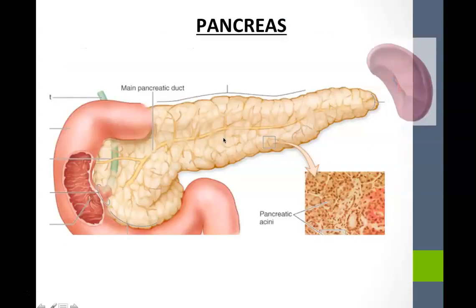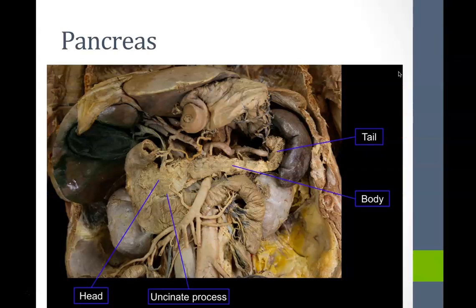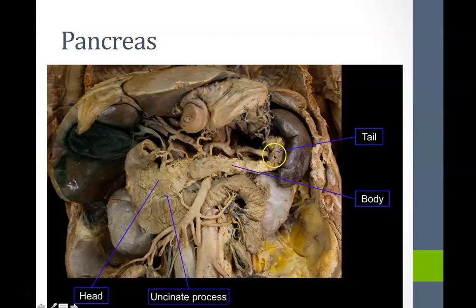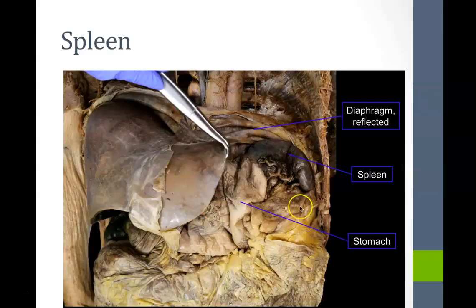The pancreas has its head cradled by the duodenum, the body transverses the vertebrae, and the tail points toward the spleen. The spleen is found in the left upper quadrant. In the cadaveric image, we can see the duodenum, head of the pancreas, body, and tail pointing toward the spleen in the left upper quadrant. One of the spleen's main roles is to remove old red blood cells and hold a reserve of blood.